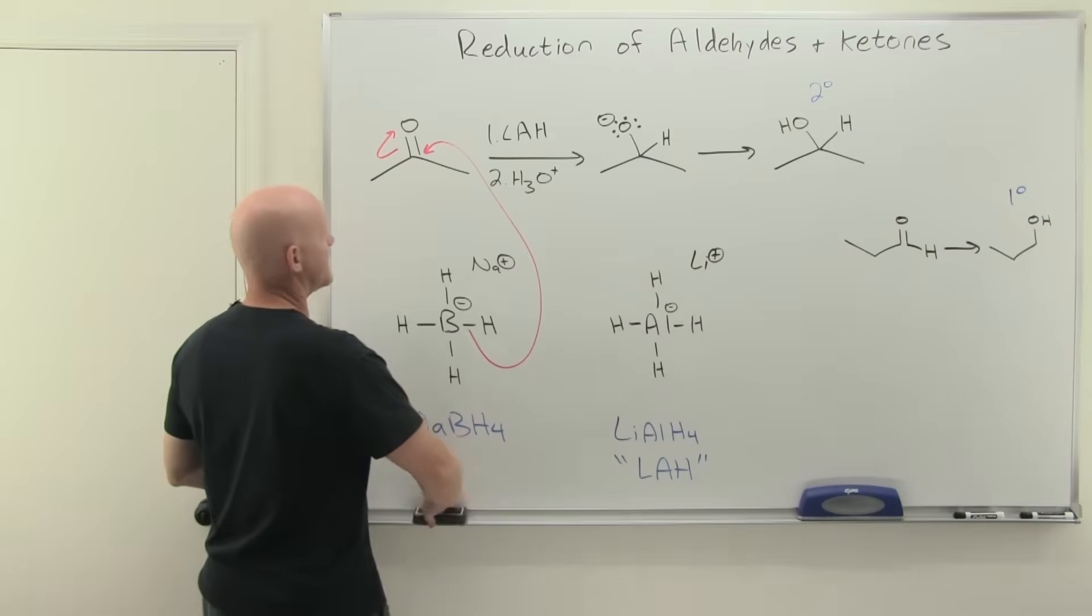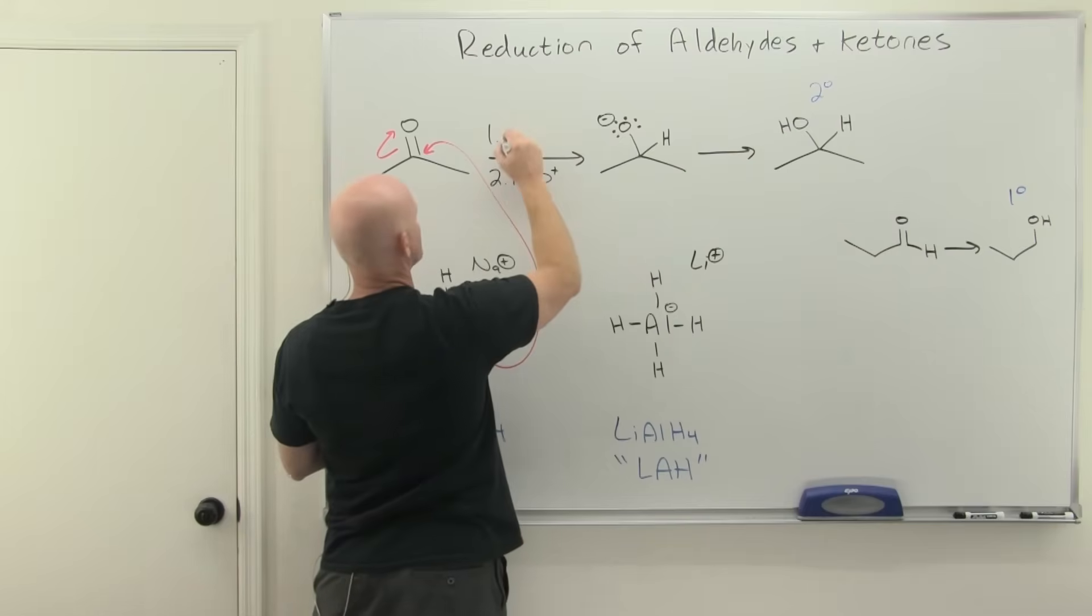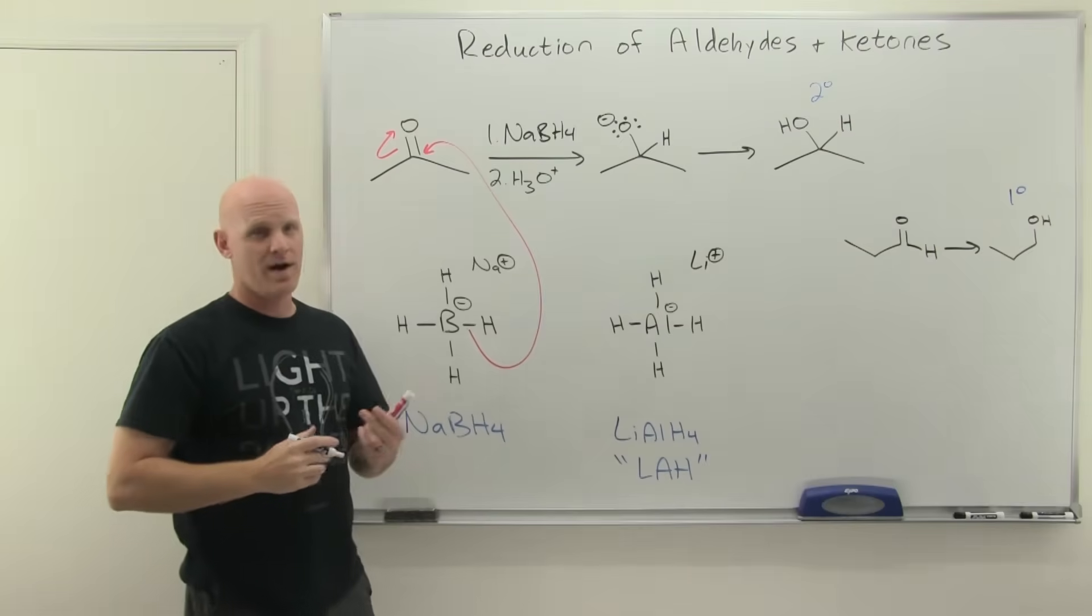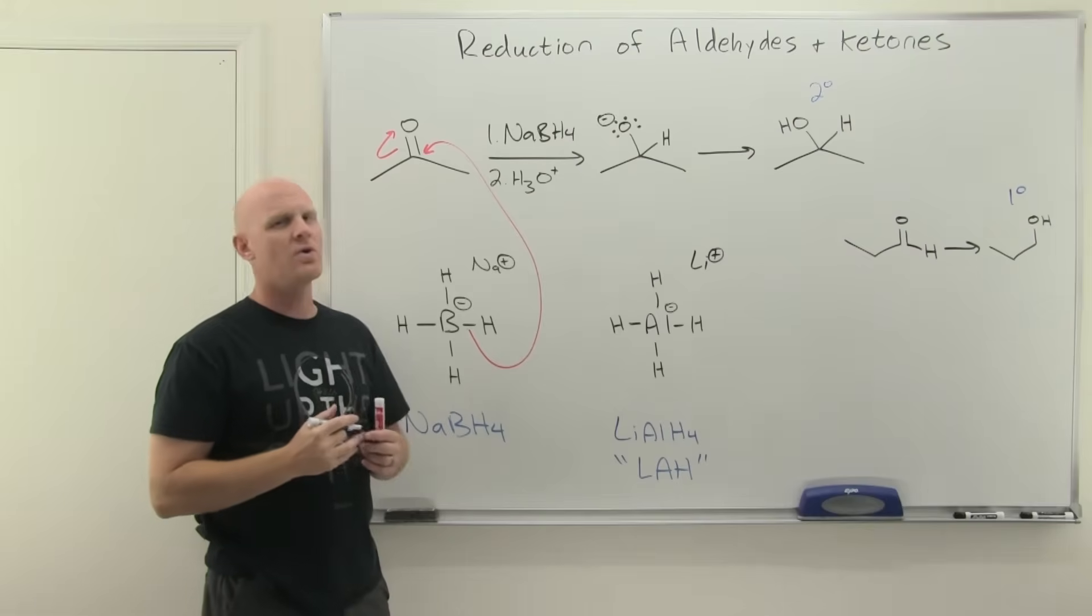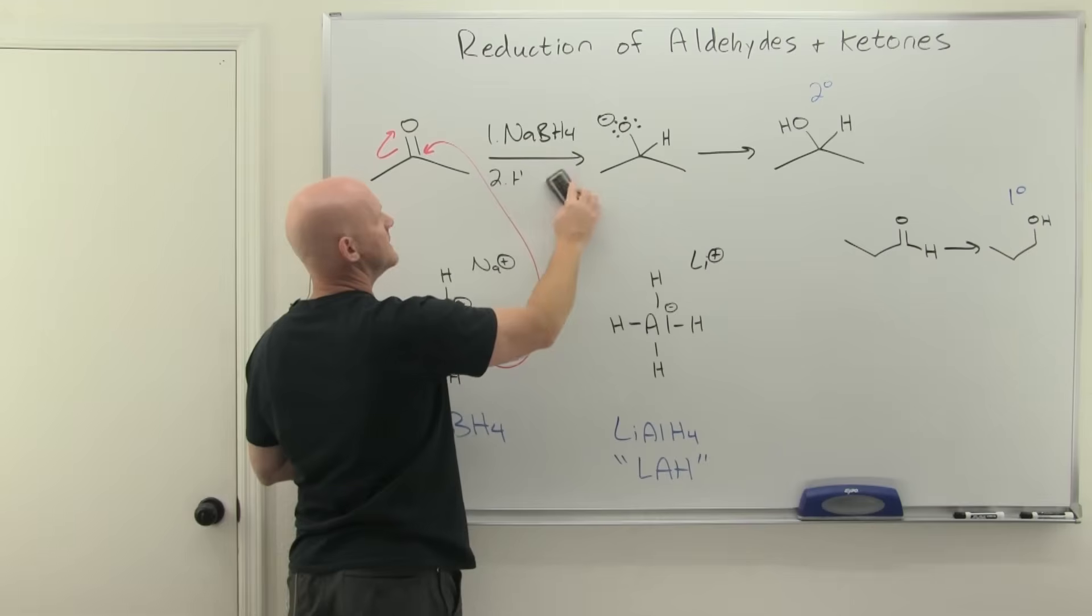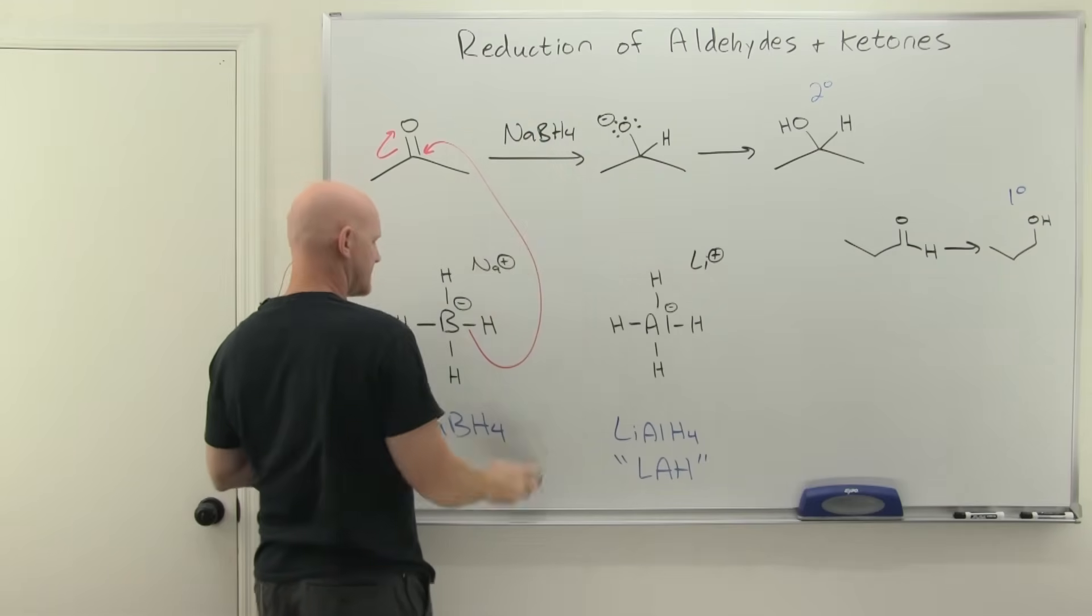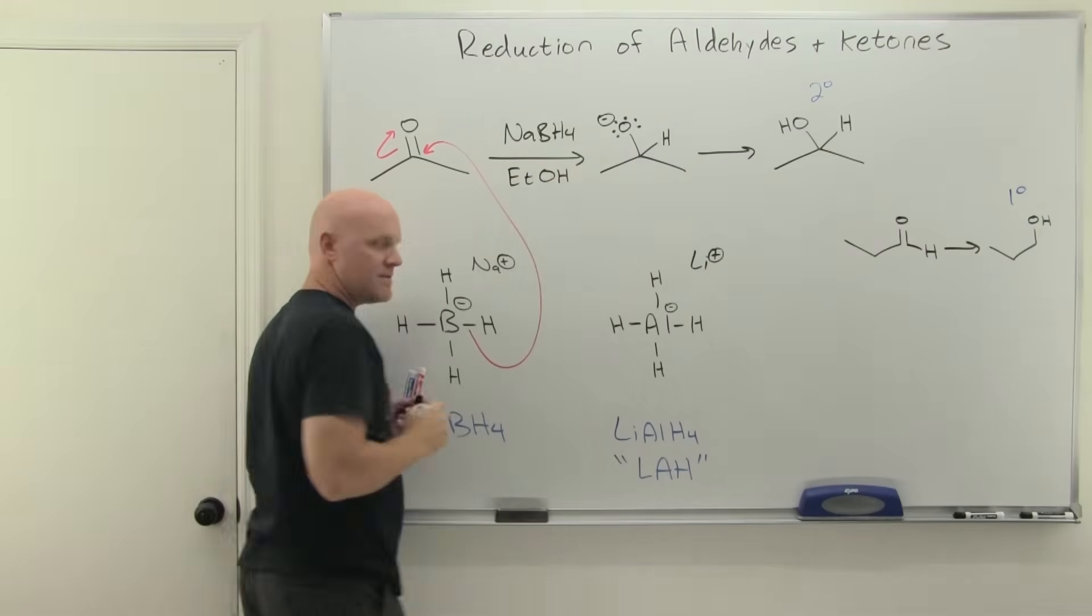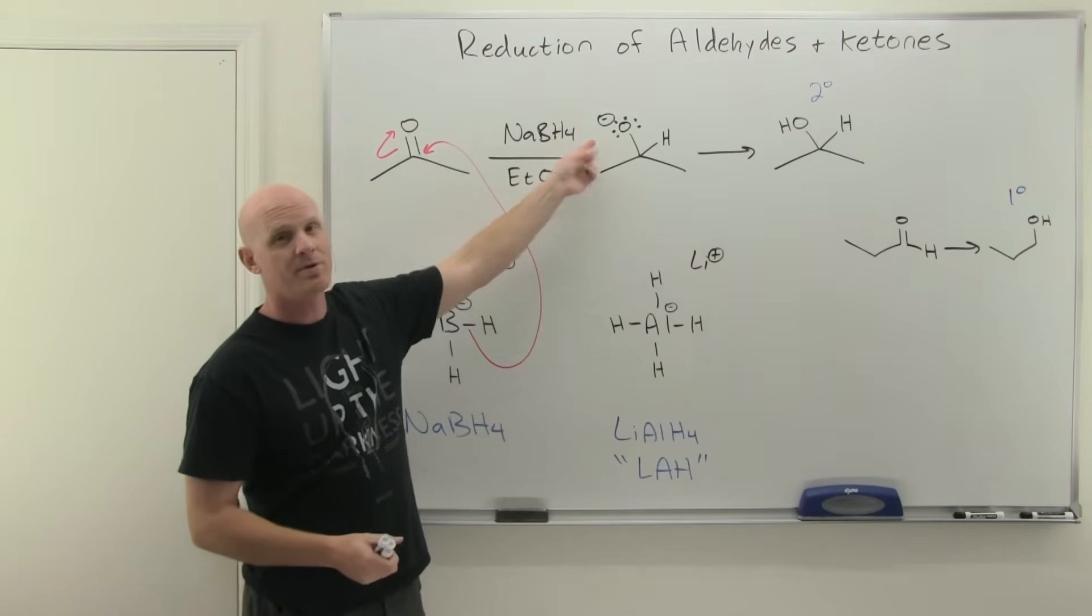With sodium borohydride, you've got an option. It's much less reactive than lithium aluminum hydride. You can do this exactly the same way in separate steps, no problem. But it's not necessary either. More commonly with sodium borohydride, instead of a separate acid workup step, it's low enough in reactivity that it doesn't have a problem with protic solvents. Most commonly, this reaction is done in ethanol.